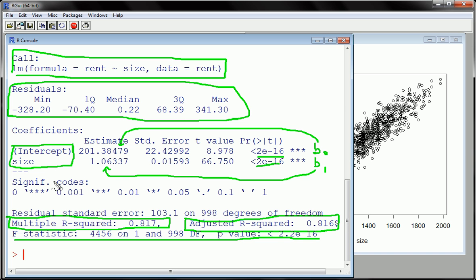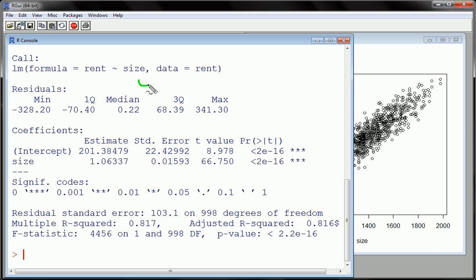So, what I want out of this, though, is to pull out these coefficients. And put them in the form of an equation. So, let's just write it here. y hat equals 201. Let's just round to two decimal places. 0.38. Plus 1.06 times x. And on top of that, I can replace y and x here with size and rent for y. Okay.